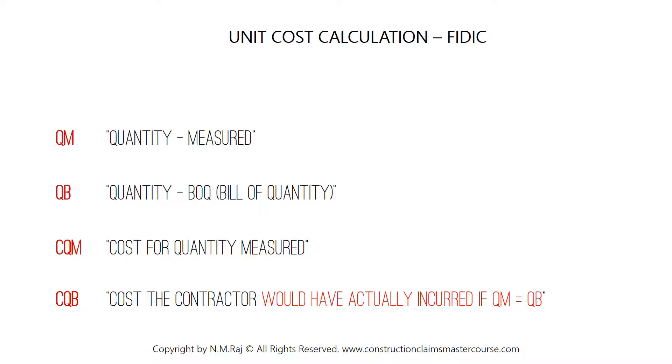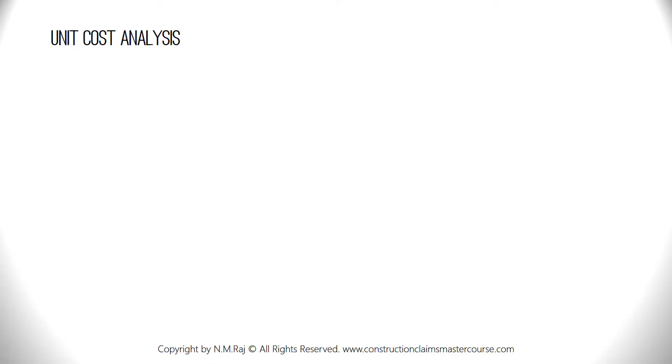Don't worry if you're confused — once we do the workshops, everything will become crystal clear. Before we move on to the workshops, it is extremely important that you understand the concept of unit cost analysis. A unit cost in construction may be described as the cost incurred per unit of work output, e.g. cost of painting per square meter, cost of concrete per cubic meter. Unit cost is equal to total cost divided by productivity.